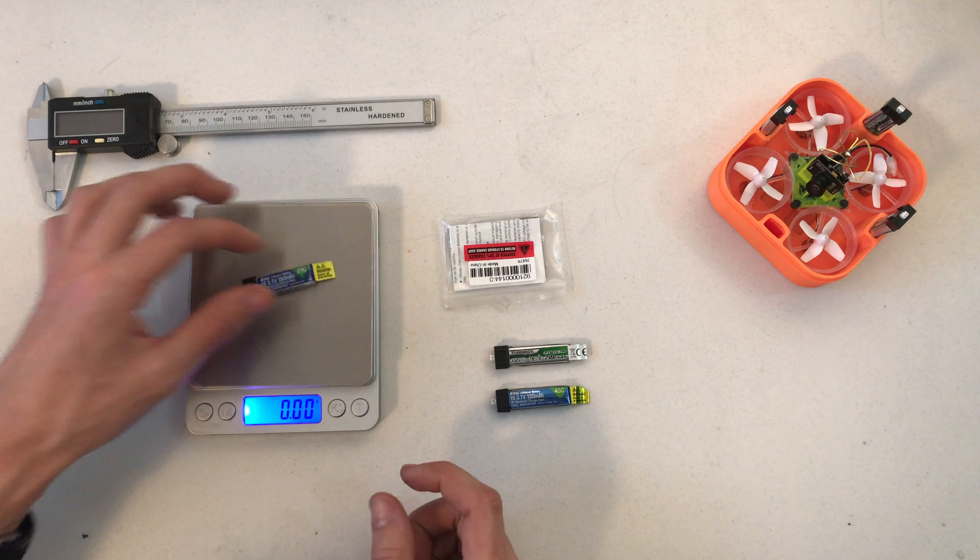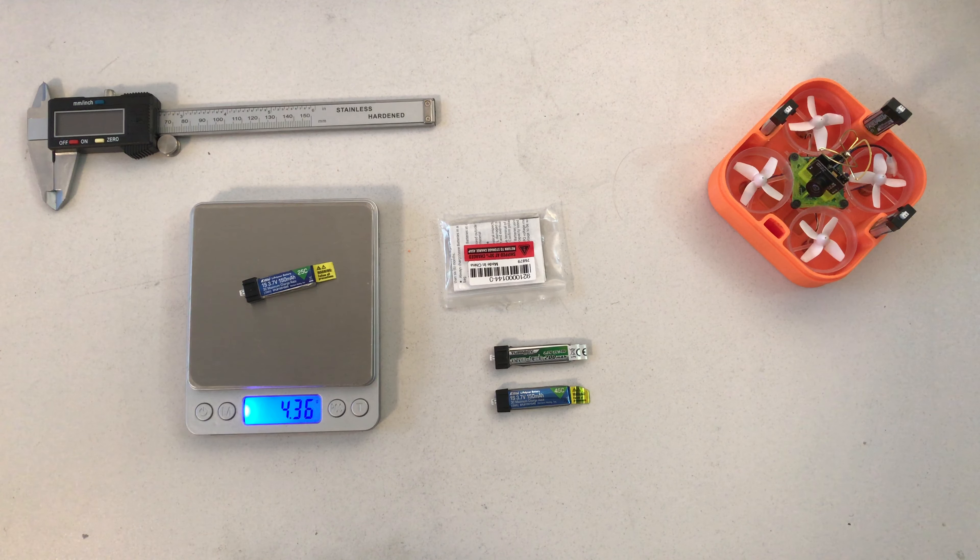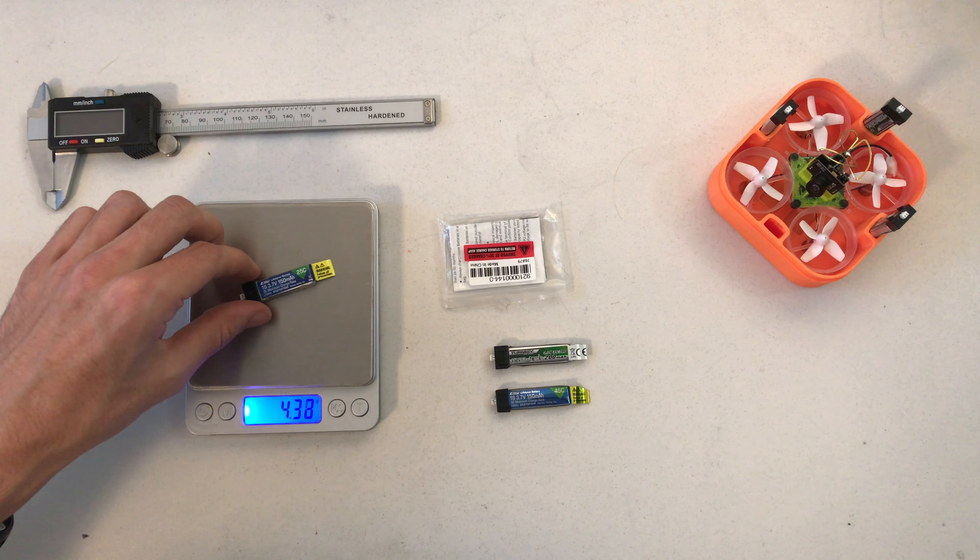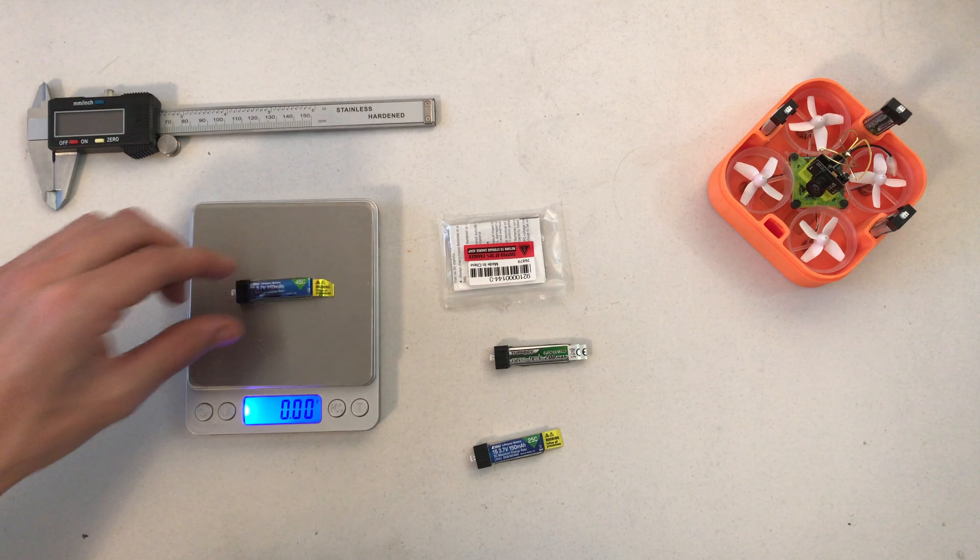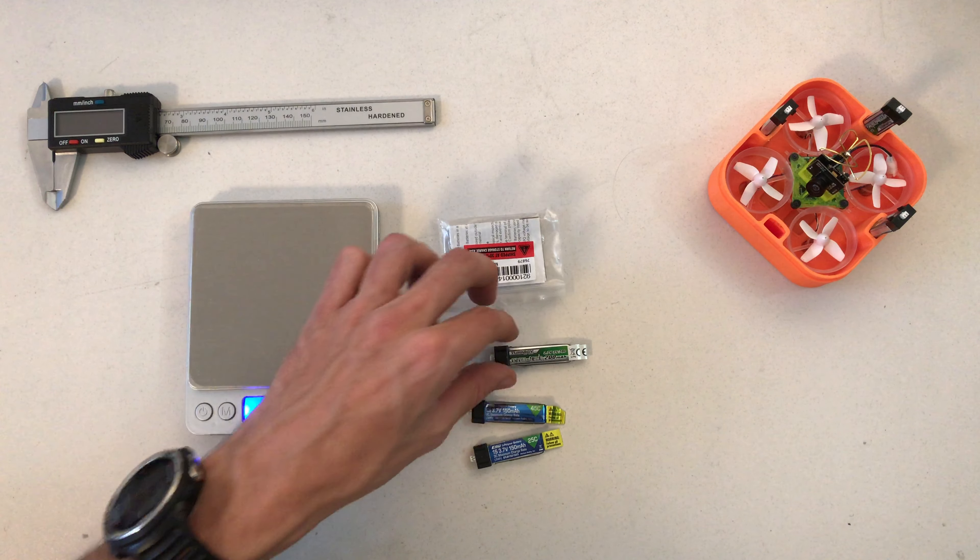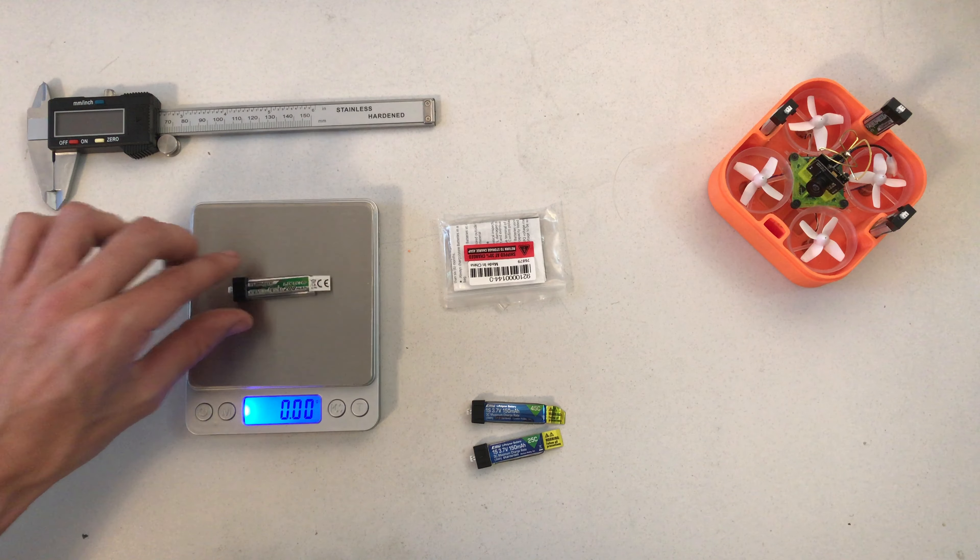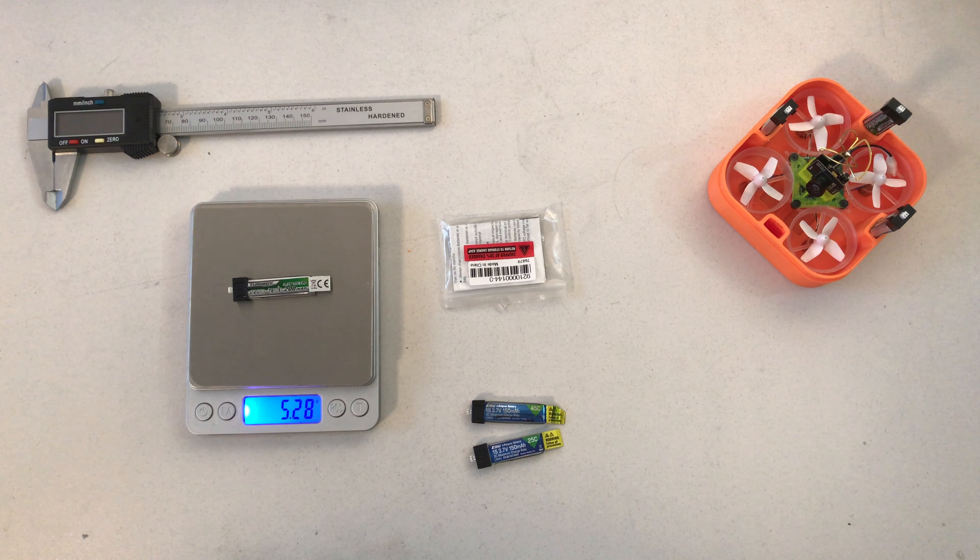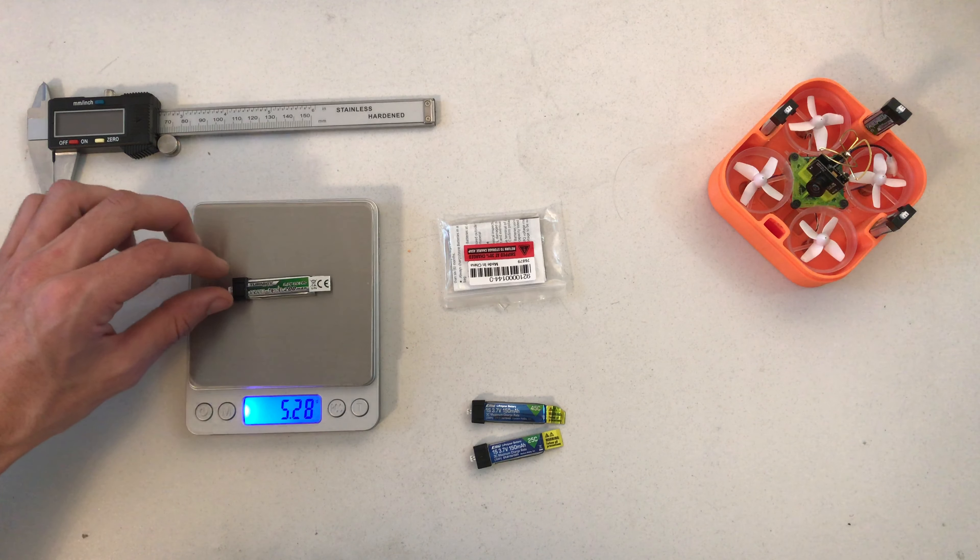Let's start with the lightest one. That's 4.36 grams. Then, the 45C eFlight, that's 4.51 grams. And the 200mAh Nanotech, 5.28 grams.